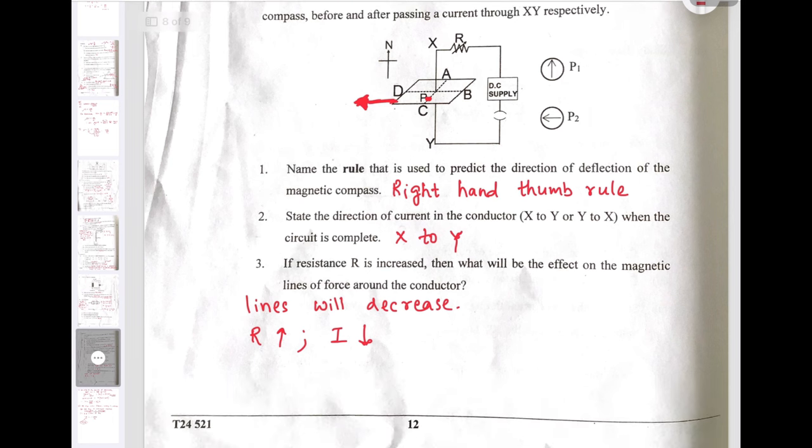If resistance R is increased, then what will be the effect on magnetic lines of force? If R increases, current decreases. And if the current decreases, the magnetic field around the conductor will also decrease. Hence, the number of field lines will also decrease.